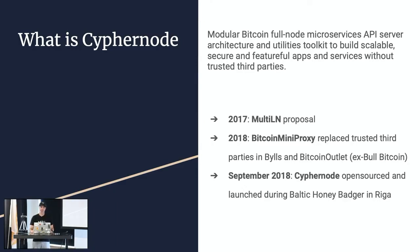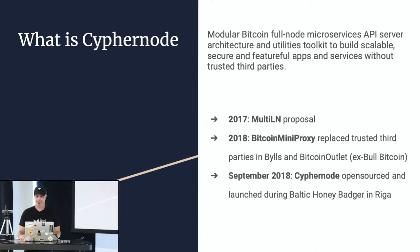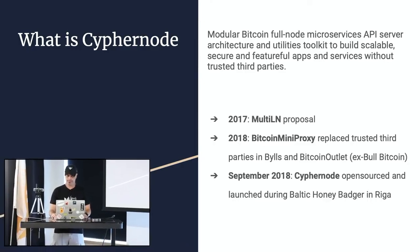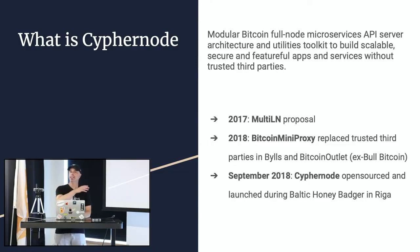A bit of history about Cyphernode. In 2017, Francis and I made a talk about Lightning Network for Montreal's IoT community meetup. I had the idea of building something that would allow BullBitcoin - back then it was called Bitcoin Outlet - to use Lightning Network easily. I called it Multi-LM, because it was one API for any kind of implementation of Lightning Network behind that: C-Lightning, LND, Eclair, or whatever.